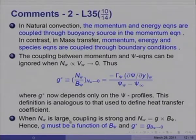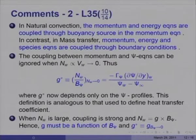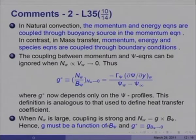When Nw is large, the coupling between the momentum equations and the ψ equation is strong, and Nw equals G times B_ψ. Hence G must be a function of B_ψ, and G* equals G when B_ψ tends to zero. G will also be a function of Reynolds number, Prandtl number, and so on, but we shall shortly see what the state of affairs are.